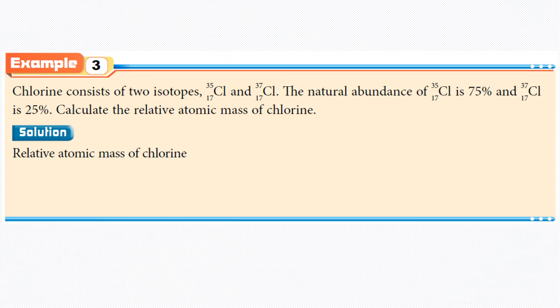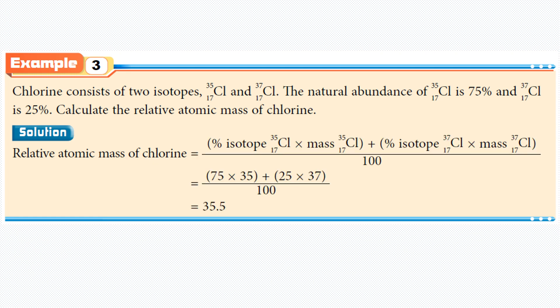Let's see an example. Chlorine consists of two isotopes: chlorine-35 and chlorine-37. The natural abundance of chlorine-35 is 75% and chlorine-37 is 25%. Calculate the relative atomic mass of chlorine. Using the formula, the relative atomic mass equals the percentage of each isotope multiplied by its mass, summed together.